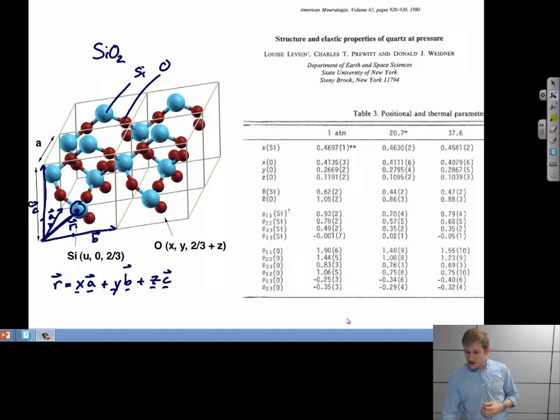So in this particular study, they looked at the positions of silicon and of oxygen at some different pressures. And they're describing those positions by fractional coordinates. Here, silicon, you only need one coordinate to describe it. Oxygen, you need all three. But we see that these positions change a little bit as we increase the pressure.